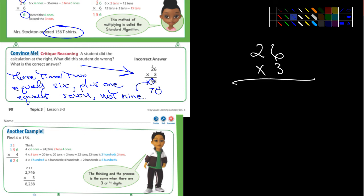Down below, they have another example. It says 4 times 156. And you can see what they've done here. They've broke it down into 4 times the 6 ones, and then 4 times the 5 tens, and then 4 times the 1 hundred. If it helps you to think about it that way, you can do that.